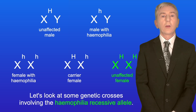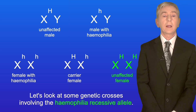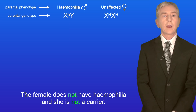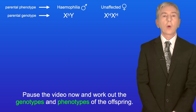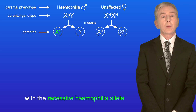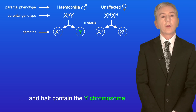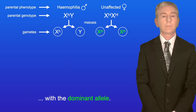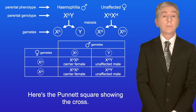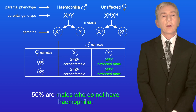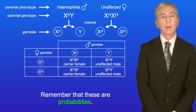Let's look at a genetic cross involving the haemophilia recessive allele. In this cross, we have a male who has haemophilia and a female who does not have haemophilia and is not a carrier. Half of the male gametes contain an X chromosome with the recessive haemophilia allele, and half contain the Y chromosome. All of the female gametes contain an X chromosome with the dominant allele. In this cross, 50% of the offspring are carrier females and 50% are males who do not have haemophilia. Remember that these are probabilities.